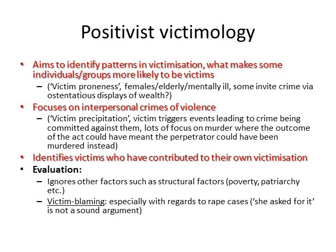There are two types of victimology. Firstly, positivist victimology, which aims to identify patterns of victimisation — what makes some individuals or groups more likely to be victims — using quantitative data to look at trends and patterns. Positivist victimologists argue there is a sense of victim proneness: some people are more likely to be victims, in particular females, the elderly, and the mentally ill. They also argue some people invite crime through ostentatious displays of wealth. They focus on interpersonal crimes of violence and the concept of victim precipitation — where the victim triggers events leading to the crime being committed against them.